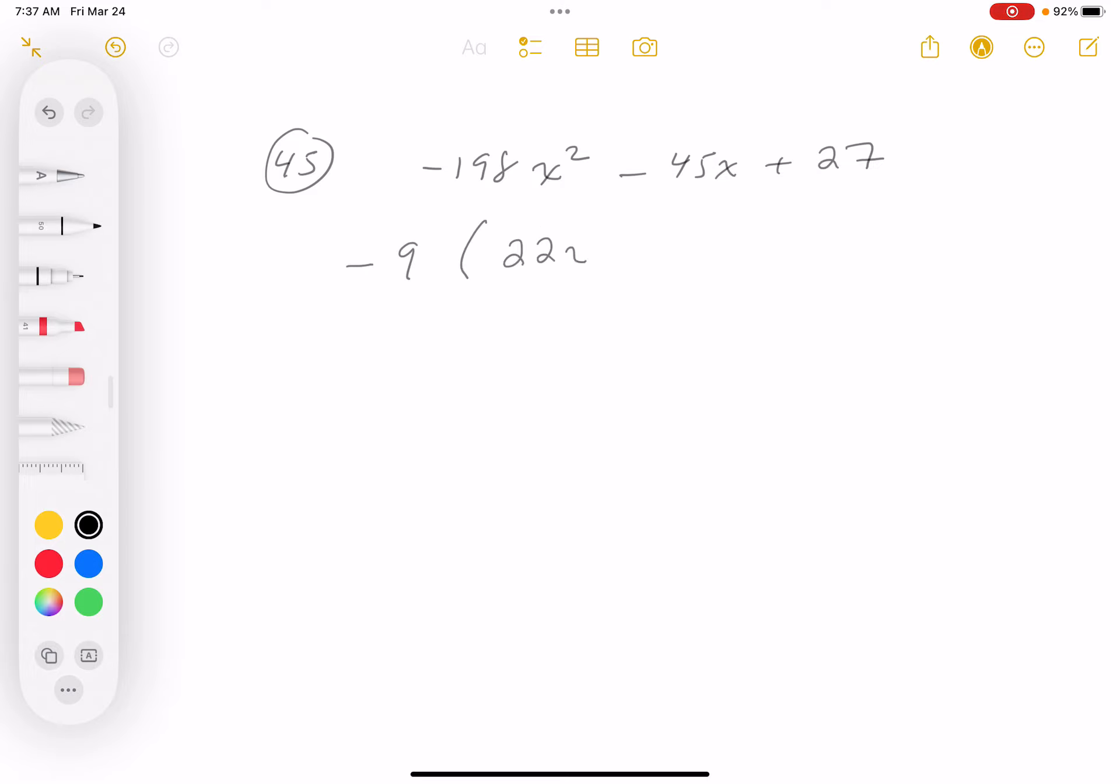This would be 22x squared. Let me just check that. That's 180 plus 18, and that's 198. That worked good. What's next one going to be? Plus, well, 5, and then minus 3. All right, so let me keep moving.